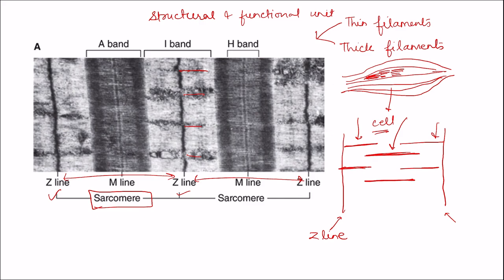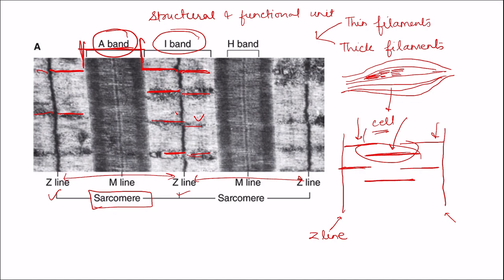Because of this arrangement we have different light and dark zones in the sarcomere. First we have the I band, which consists of thin filament. Part of the thin filament is arranged on either side of the Z line, and half of the I band is present on the other side of the Z line. The I band is the non-overlapped region of the thin filament — there is no overlapping.